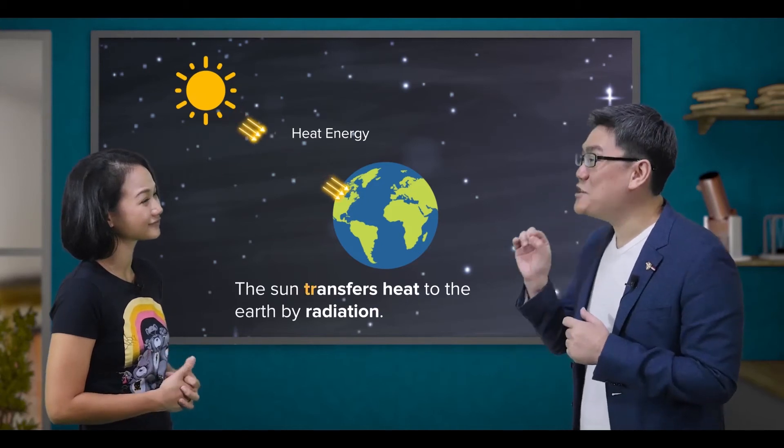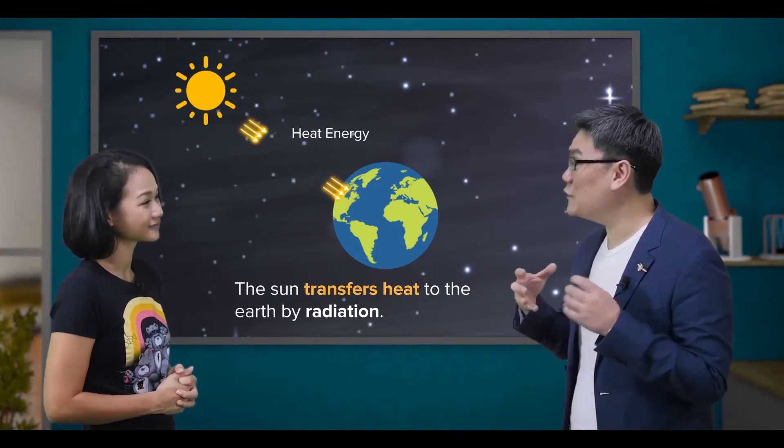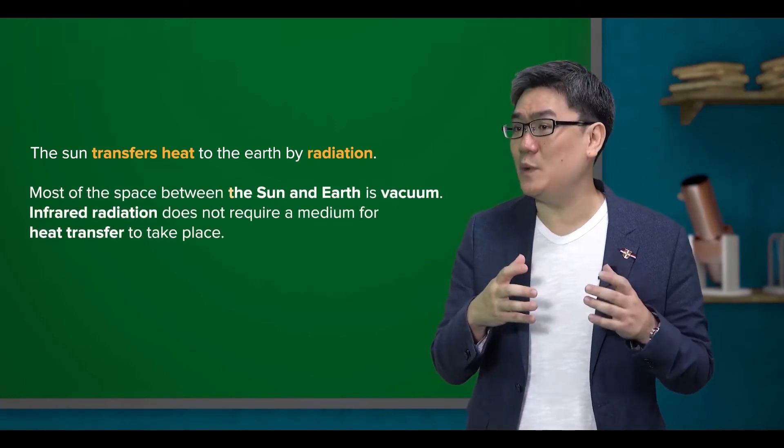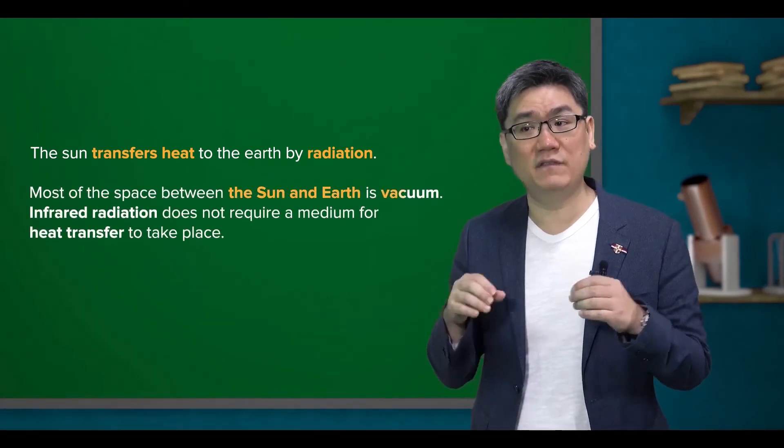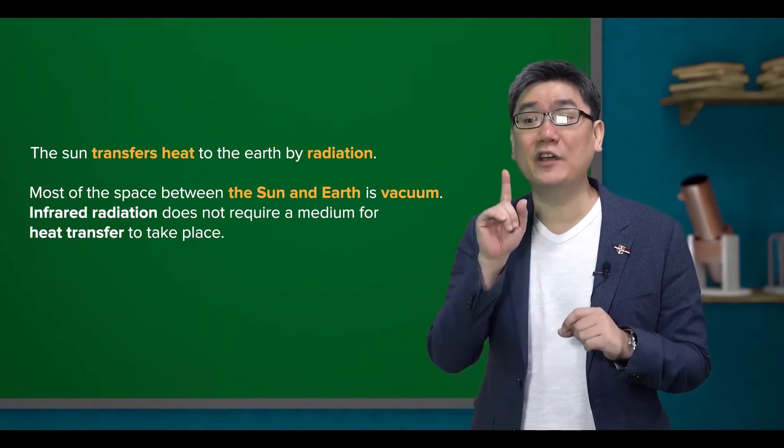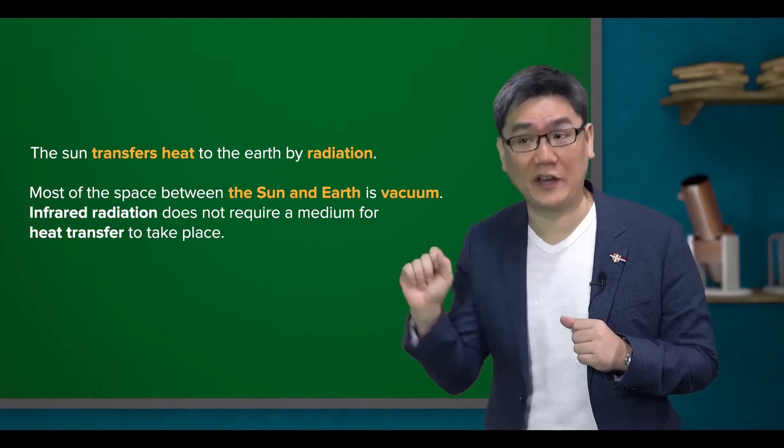Indeed, the sun transfers heat to the Earth by radiation. And since most of the space between the sun and Earth is vacuum, there is no way heat can be transferred by conduction or convection.